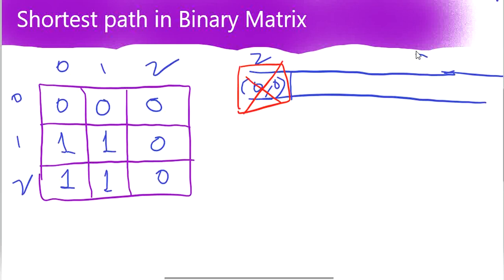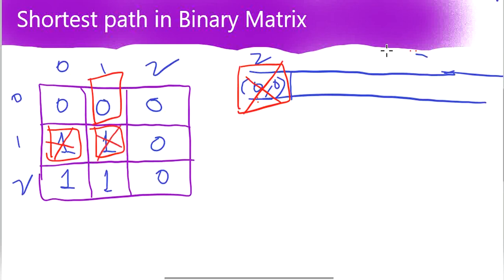The neighbors of 0,0 are 0,1 and two others. We don't have previous cells since it is the starting cell, so we have three neighbors. Out of these, we check which ones are having value one — in this case two neighbors have value one, so we simply ignore them. We can travel only if the value is 0. So the valid neighbor of 0,0 is 0,1, and we add 0,1 to our queue.